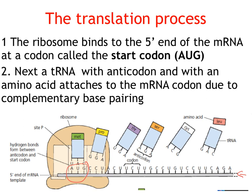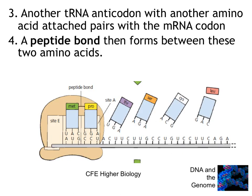A tRNA molecule with an anticodon and with an amino acid attaches to the mRNA codon due to complementary base pairing. So here is our tRNA molecule — it's traveled here and complementary base pairing occurs. This is the start codon for making the protein. Then another tRNA molecule attaches itself with a different amino acid, and it pairs with the next mRNA codon.